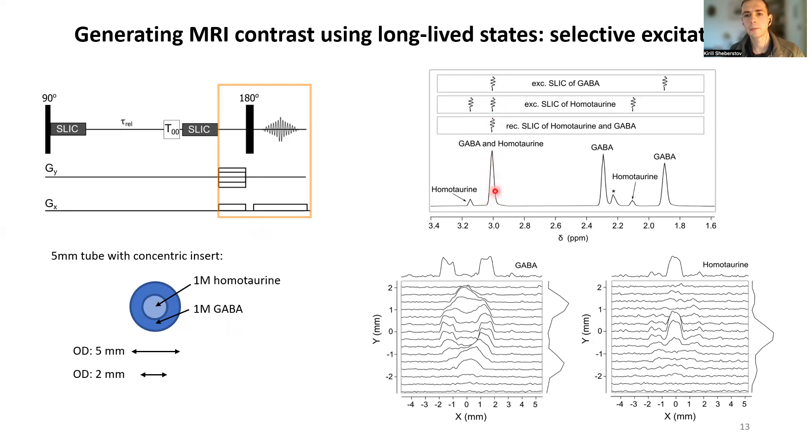But the other CH2 groups have different chemical shifts. So then you can create selectively long-lived states by irradiating by polychromatic SLIC, either in GABA by simultaneous irradiation of its CH2 group or only in homotaurine, and then read out on this overlapping peak.